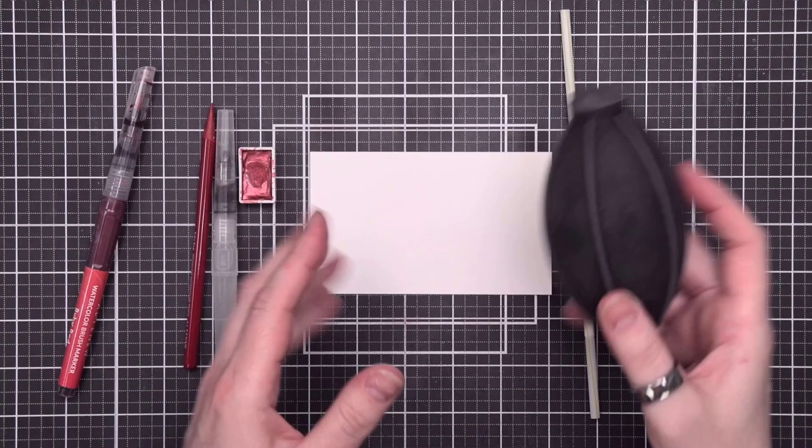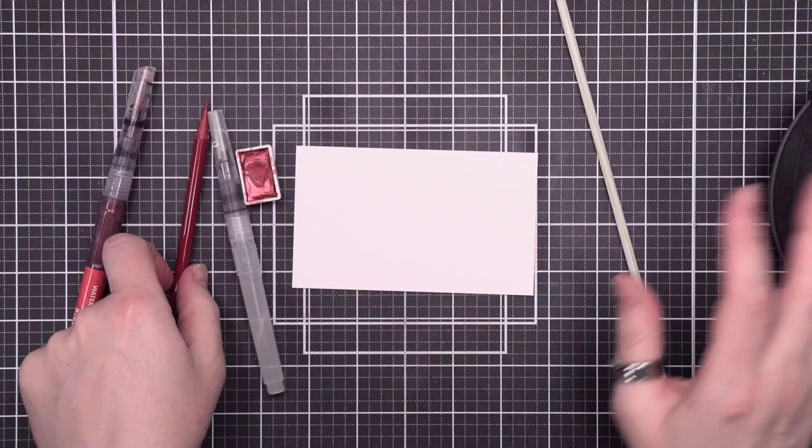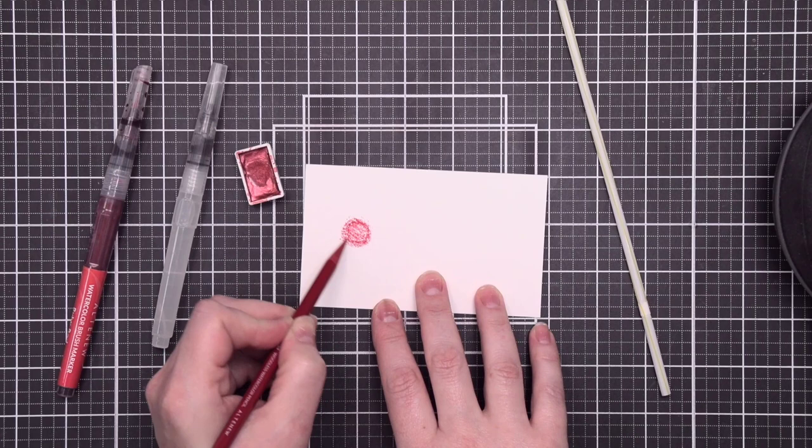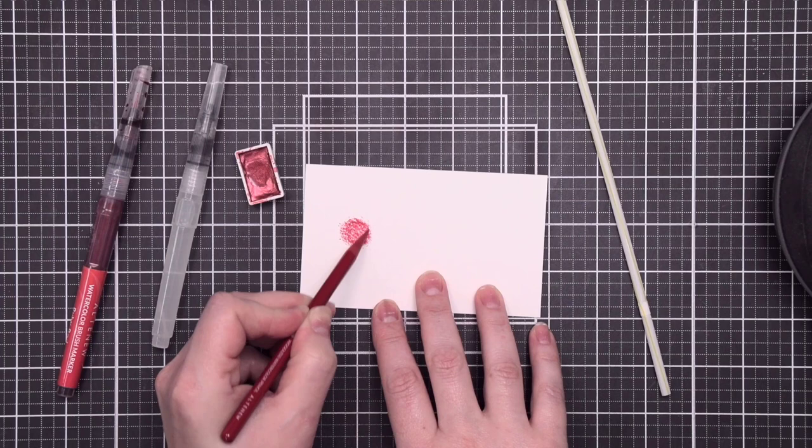To start off, if you're going to be using a watercolor pencil, the first thing you're going to want to do is add a little circle of color as deep as you would like. The more you add to this, the richer the color will end up being. This is a watercolor pencil and I'm just adding some color there.